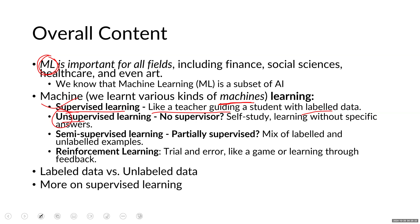Unsupervised learning, on the other hand, has no supervisor — it's like self-study learning without any specific answers. In between is semi-supervised learning, which is partially supervised with a mix of labeled and unlabeled examples. Reinforcement learning is another type, based on trial and error — like a game using a reward mechanism where positive or negative feedback drives improvements.